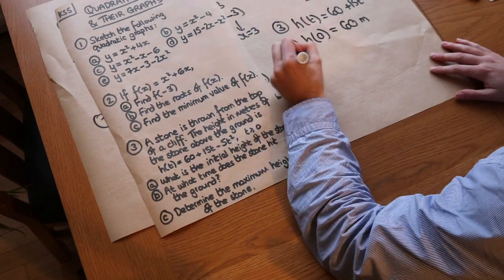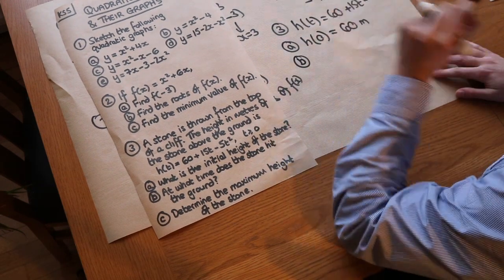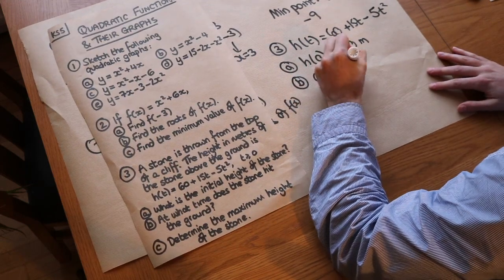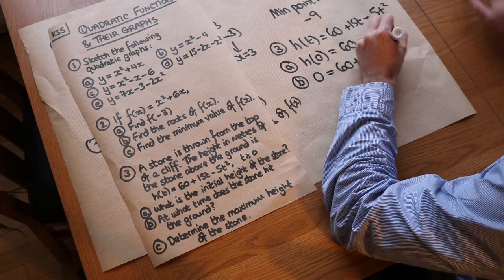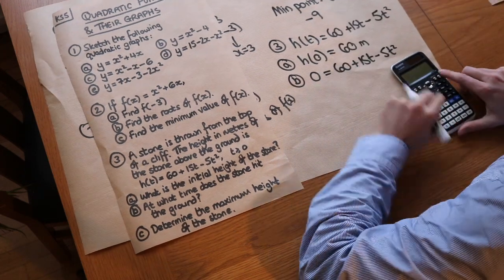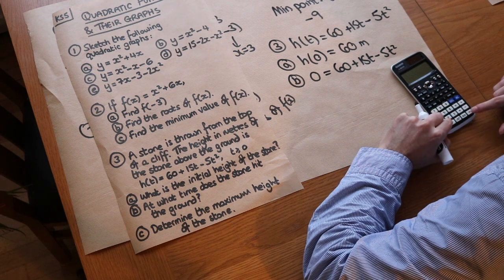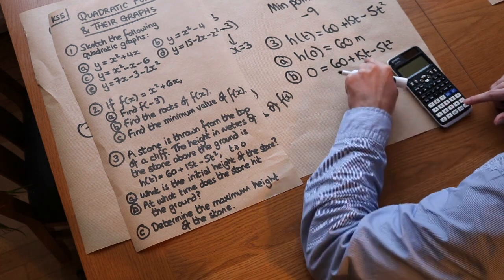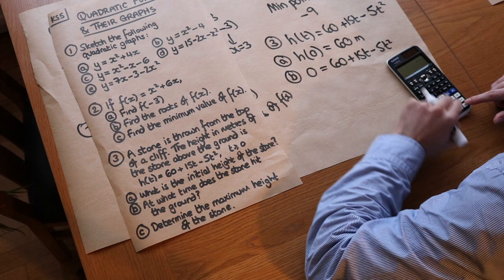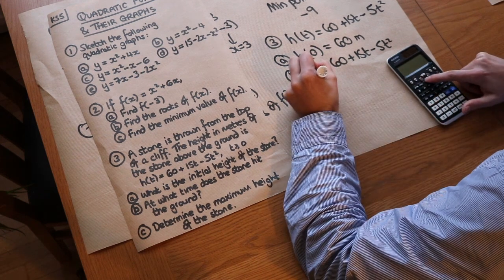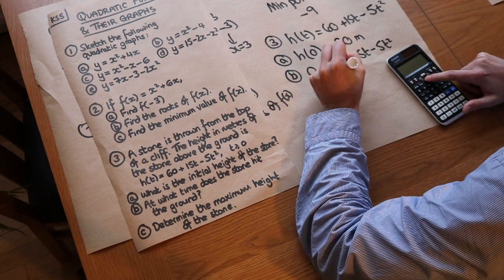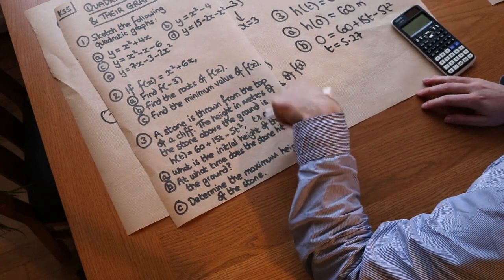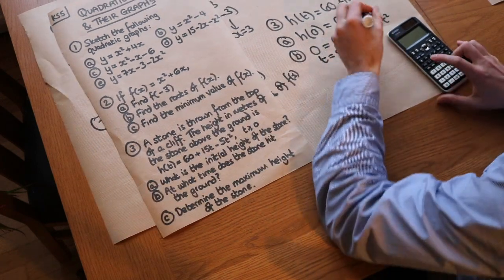To find when the stone hits the ground we set h(t) equal to 0 and solve the equation. Using the quadratic solver on a calculator, the t squared coefficient is minus 5, the t coefficient is 15, and the constant is 60. This gives t equals 5.27 seconds (the other solution is negative and therefore rejected since time must be positive).